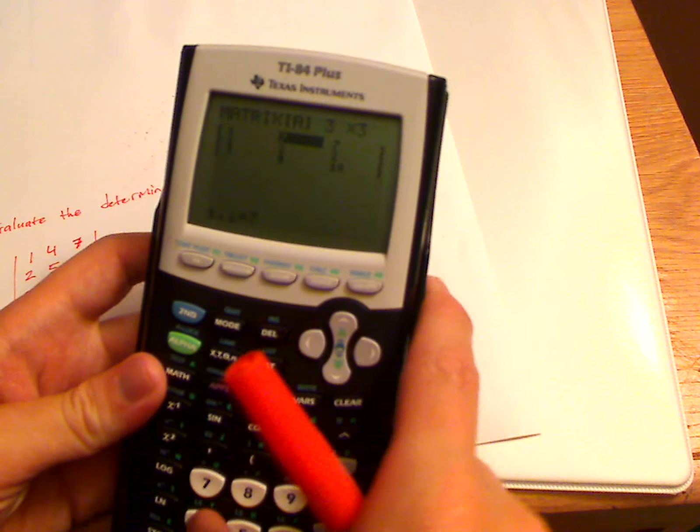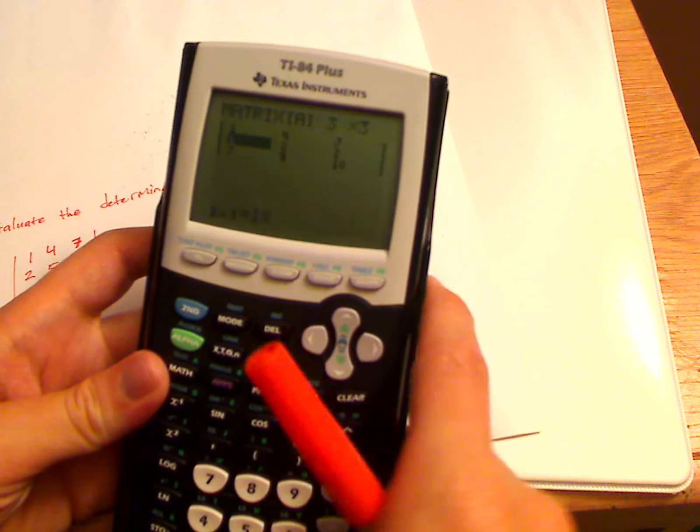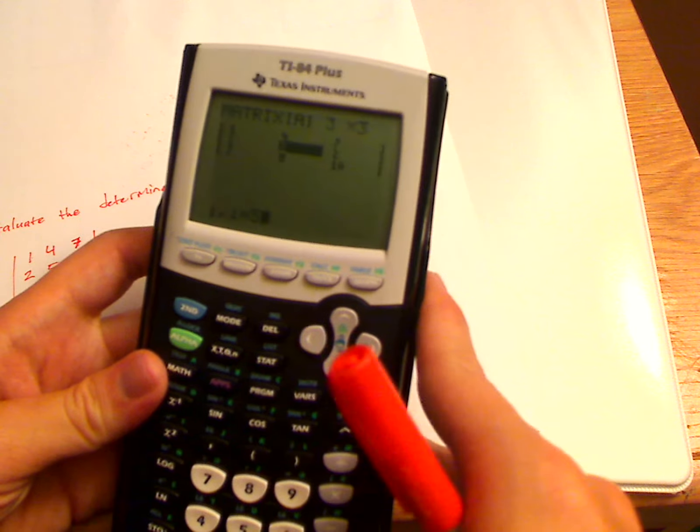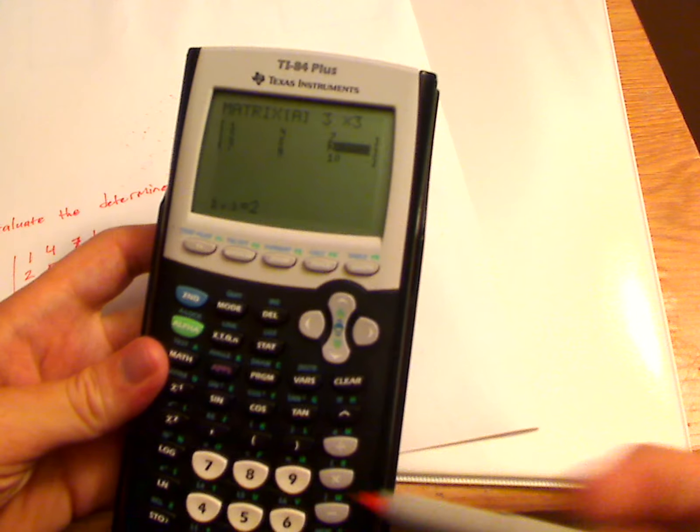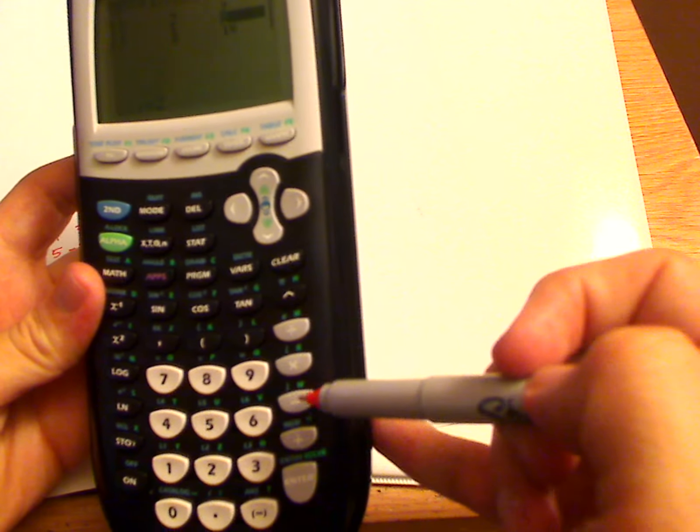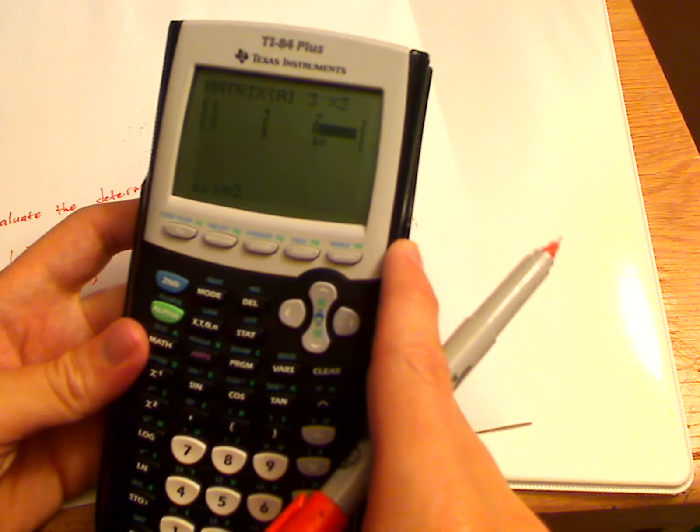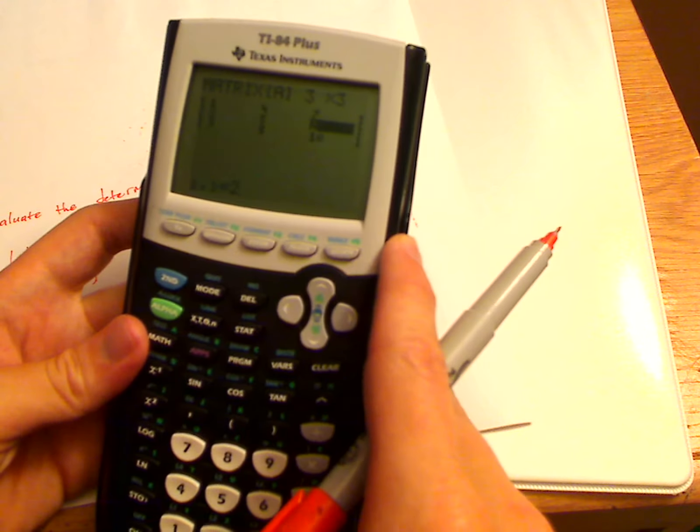So 1, 4, 7, 2, 5... When you're doing negatives, make sure you push the negative button down here and not the minus sign, because it'll be a syntax error. So negative 8, and then the last row would be 3, 6.